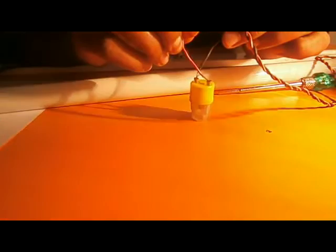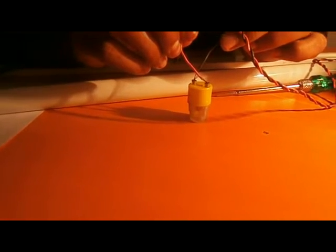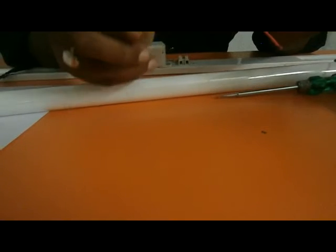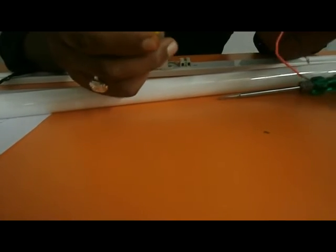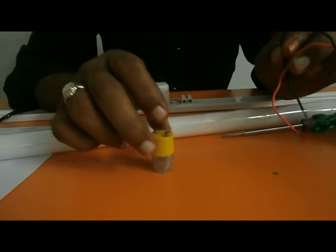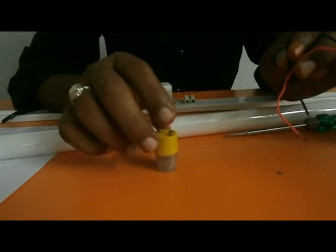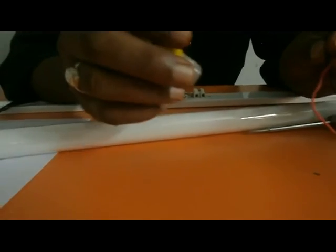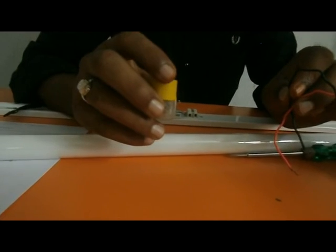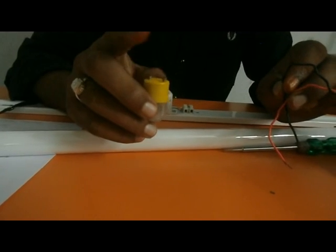This starter has to be in flickering mode. But this starter is glowing the series lamp continuously. That means this starter has got a short circuit and is faulty. We shouldn't use this starter in the circuits. This is how the tube light connection is given.